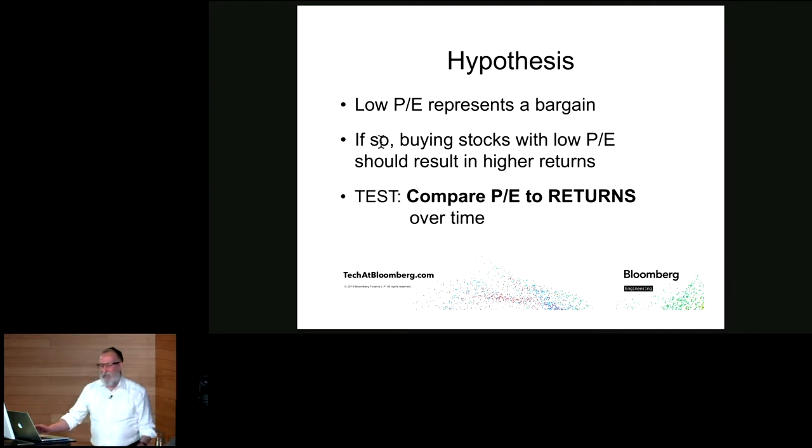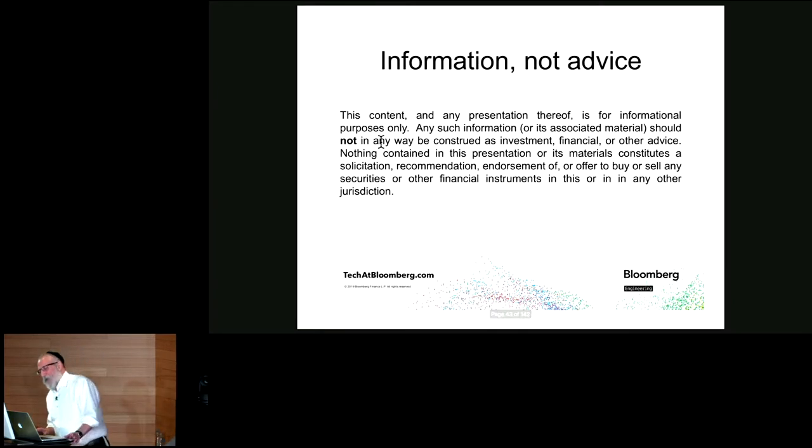So now we understand the three primary data structures of Pandas. Back to our hypothesis, the idea is that low price-earnings ratio represents a bargain. If so, then buying stocks with low PE should result in higher returns. So we want to compare the PE ratio to the returns, and we hope to find a negative correlation. That is, when the PE is low, we expect the returns to go up. Here's the fine print, this is information, not advice.